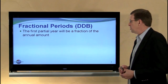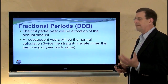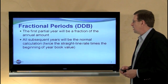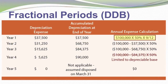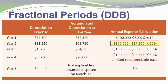Let's consider fractional period depreciation with double declining balance. The first partial year will be a fraction of the annual amount; all subsequent years will be based on the normal calculation. In this case, we've got our $100,000 asset times 50%, but we only use the asset for nine months — nine-twelfths of a year. So we return $37,500 of depreciation for the year, taking us into the next year with a book value of $62,500. We start that year with $62,500 net book value times 50%, giving us $31,250 as depreciation expense.